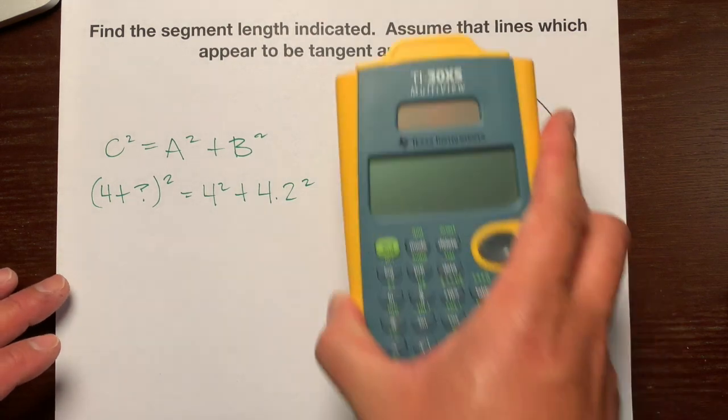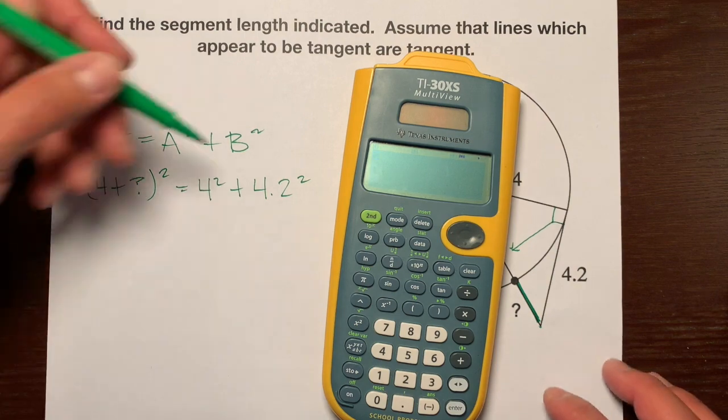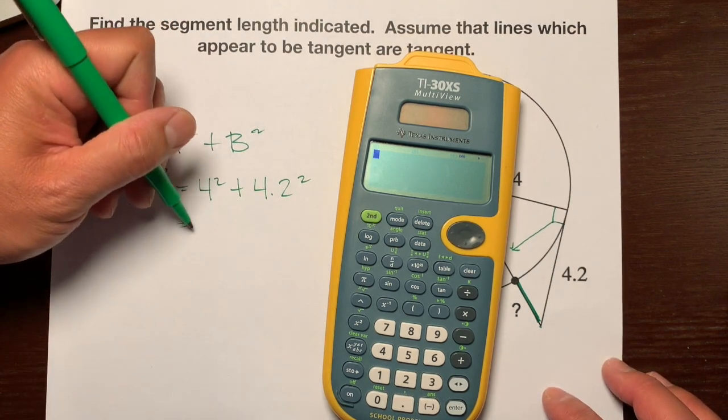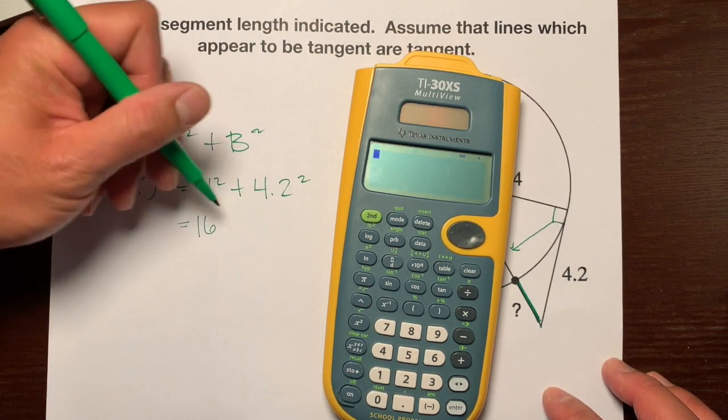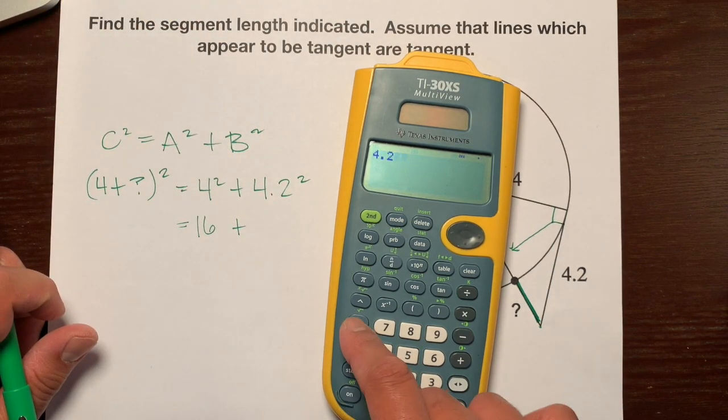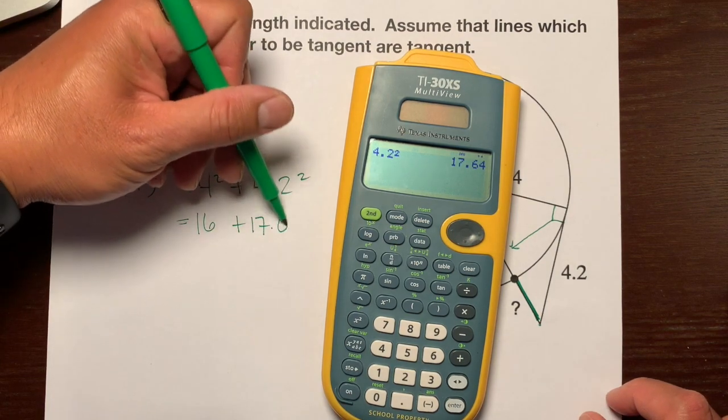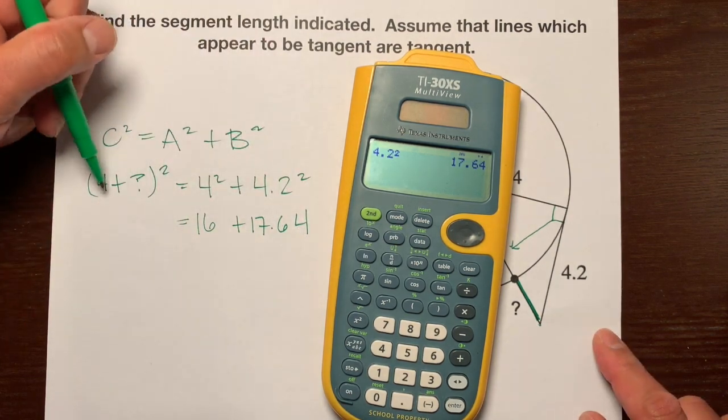And then let's just grab our calculator and start scoring some numbers. So 4 squared, well, we don't need a calculator for that. Hopefully not 4 squared is not 8, it's 16, but what's this decimal square? So 4.2 squared is 17.64 is equal to, so now here,